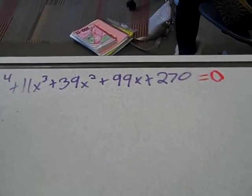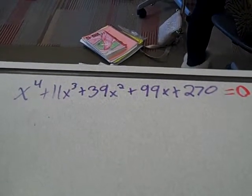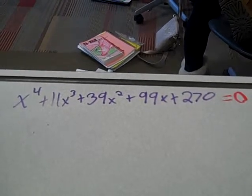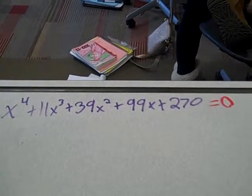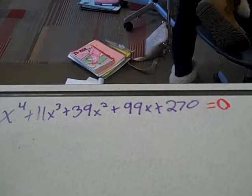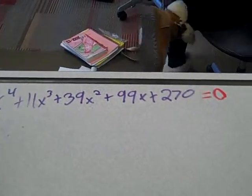I'm Kyle. I'm Elena. And this is our question. So solve the polynomial and it reads x to the 4th plus 11x to the 3rd plus 39x squared plus 99x plus 270 equals 0.